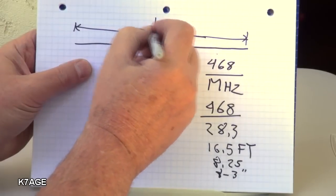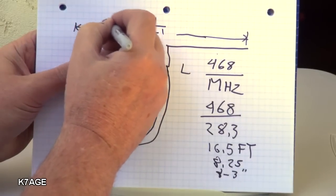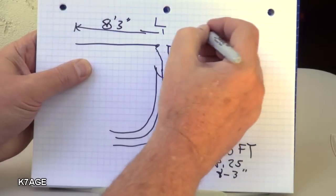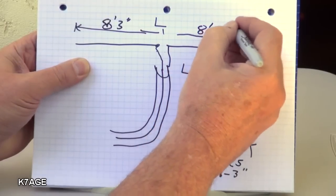So from the center out would be eight feet three inches and the same over here eight feet three inches.